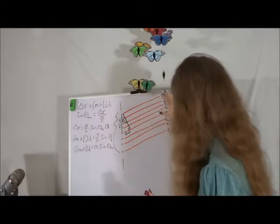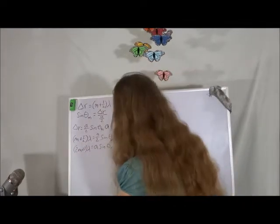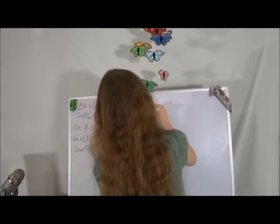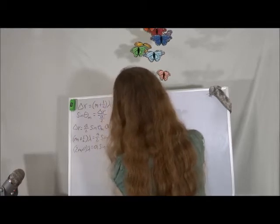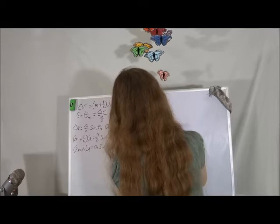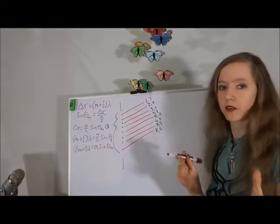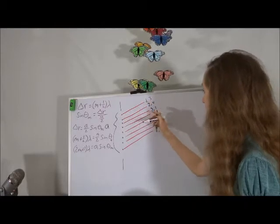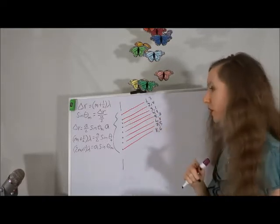What about even multiples? We pair off our lines differently. Now I pair one with three, two with four, five with seven, and six with eight. The distance between one and three is the same as between two and four, five and seven, and so forth. If we can make one and three perfectly destructively interfere, we can do the same for all the other pairs.